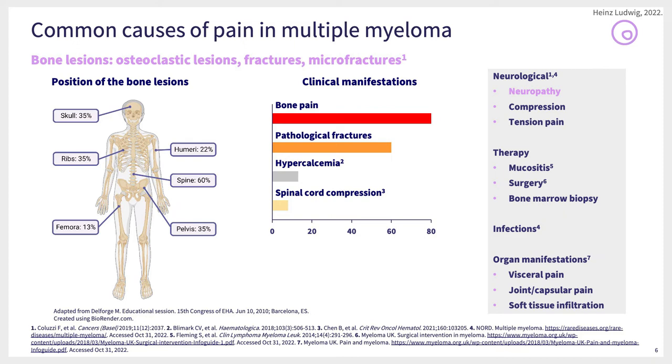Less frequently, you may find lesions in long bones — the humerus and femora.